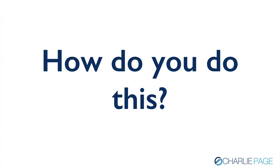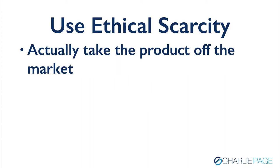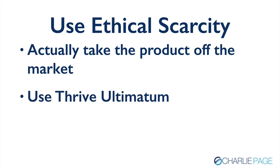So how do you do ethical scarcity? Number one: actually take the product off the market when you say you're going to. Don't use one of those timers that when it runs out nothing changes and three weeks later people can still buy the special offer. If you're going to put a timer on something, that timer needs to mean something — at the end of the day, the page needs to change. You can use Thrive Ultimatum to completely automate this process. It will run the same special every three months, every three weeks, every three years — whatever you want. If you're doing one-time things, you can set it up so it's open for three or four days and then it goes away.